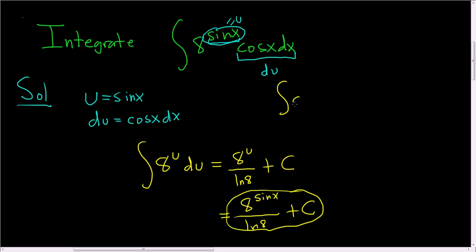So again, the formula we used here is that if you have a to the u du, this is simply a to the u over the natural log of a plus c. I hope that made sense.